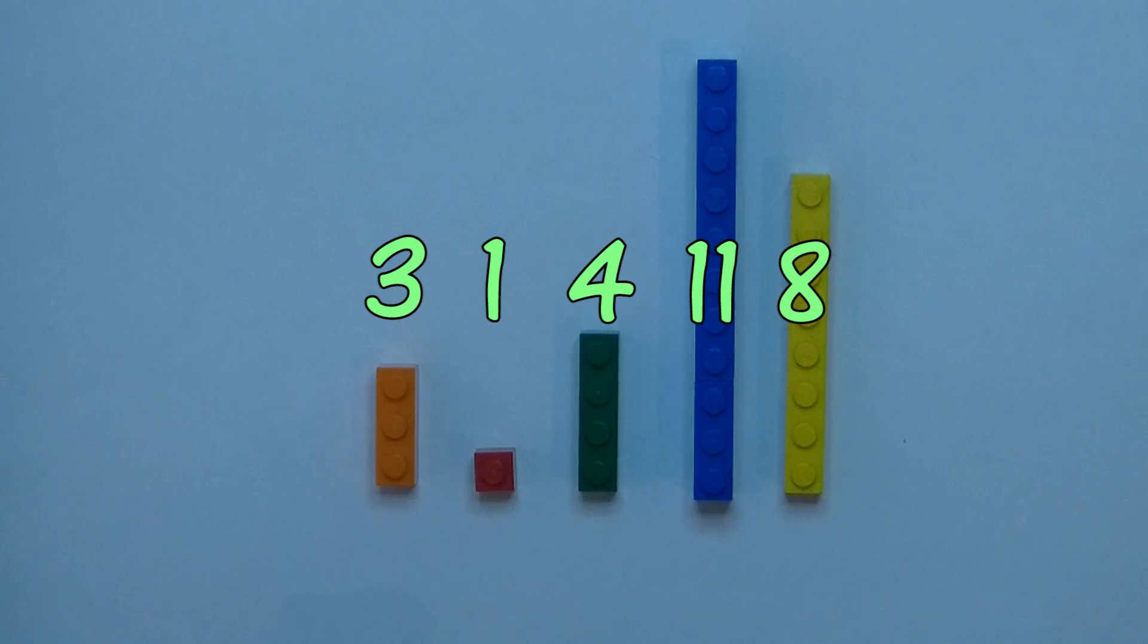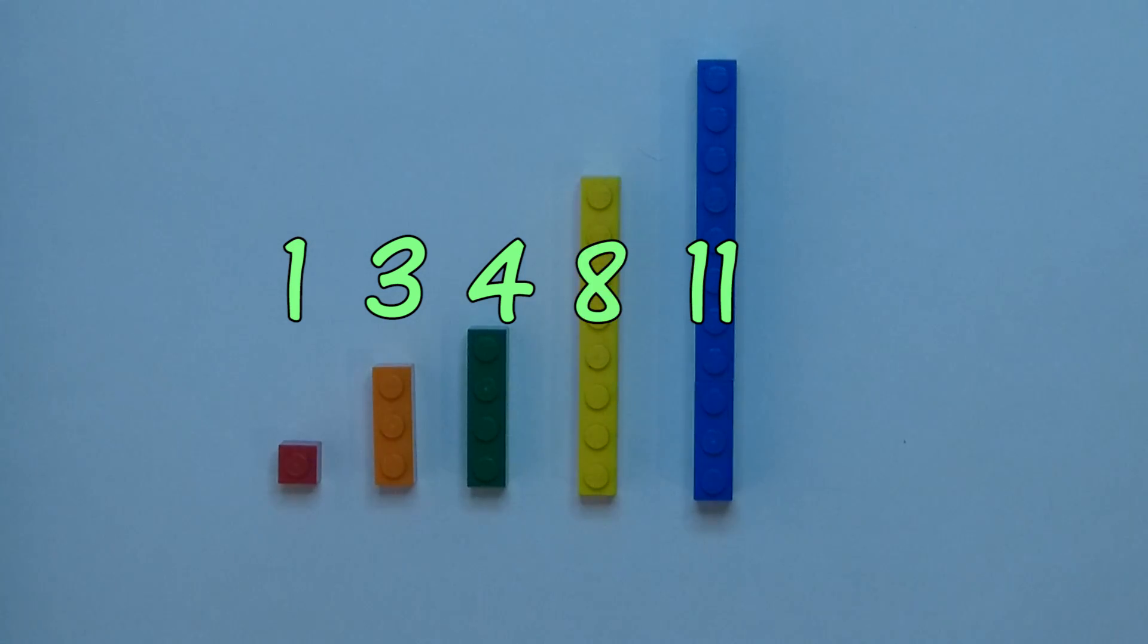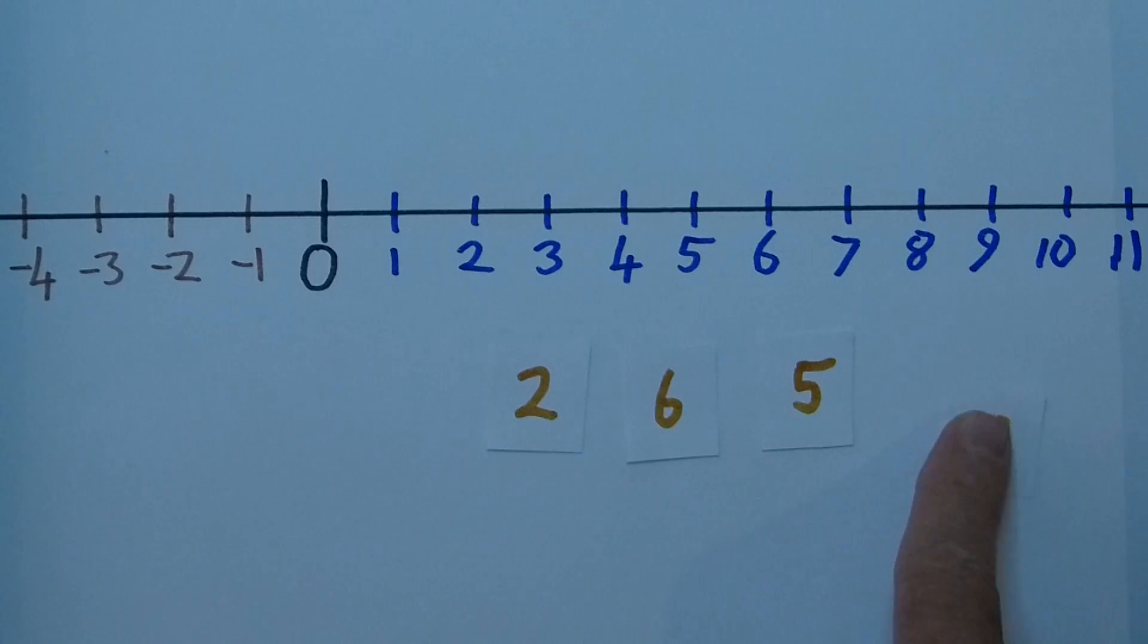To put numbers in order, place them from lowest up to the highest. We can use the number line to help us.